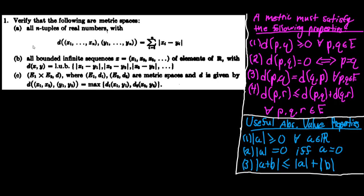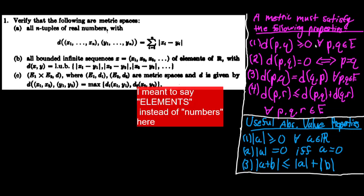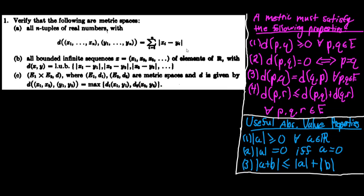Welcome back to Metaphor Math. We're solving problem 1a in this video. In problem 1, they're asking us to verify that the following are metric spaces. I like to think of a metric as a notion of distance — a rule that assigns to each pair of elements in any set a real number that satisfies the following four properties. In order to verify that this is a metric, we need to show that it satisfies all four of these properties.